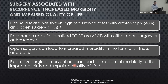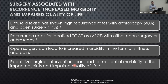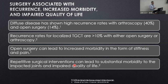Surgery, even though it's the standard of care and the backbone of treatment, is associated with a recurrence risk and increased morbidity — anytime you have an operation you'll have scar tissue. The surgery itself can impair quality of life. Diffuse disease in particular shows high recurrence rates whether arthroscopic or open. The localized group has 10% or less chance of recurrence, but diffuse disease is a real challenge. Surgery can lead to morbidity in the form of stiffness and pain, and often takes more than one operation. The more you operate, the stiffer the joint can get.